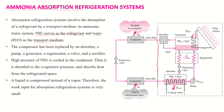In the absorption cycle, the compressor is replaced by an absorber, pump, expansion valve, regenerator, rectifier, and a generator. At the start of the cycle, a liquid is compressed instead of a vapor. This means the pump is used to increase the pressure of the liquid, whereas a compressor is used for vapors.